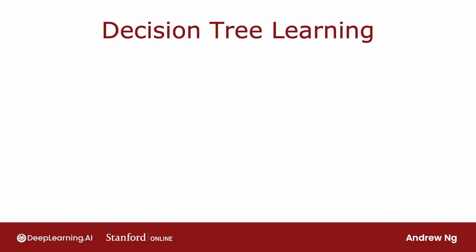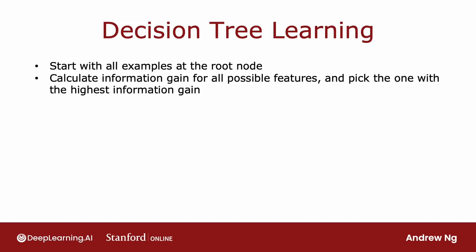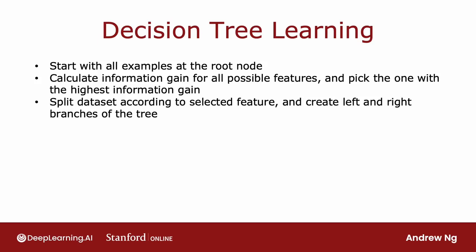Here's the overall process of building a decision tree. Start with all training examples at the root node of a tree and calculate the information gain for all possible features, and pick the feature to split on that gives the highest information gain. Having chosen this feature, you would then split the dataset into two subsets according to the selected feature and create left and right branches of the tree, sending the training examples to either the left or right branch depending on the value of that feature.